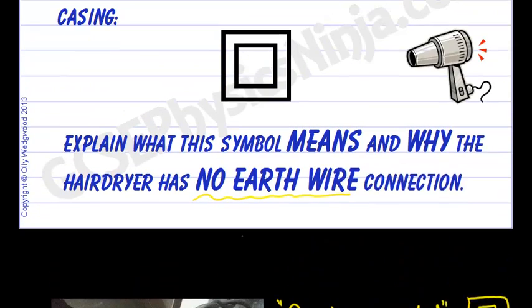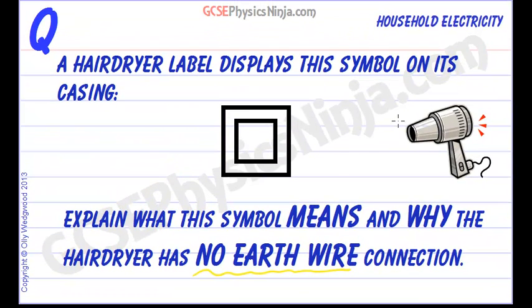So that's the meaning of the symbol. It means double insulated appliance. It doesn't need an earth wire because the casing is an insulator.